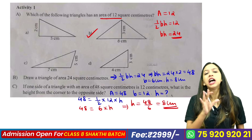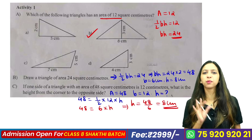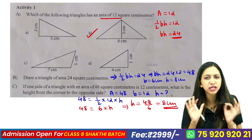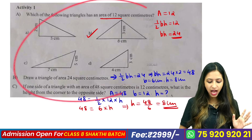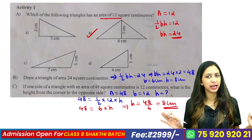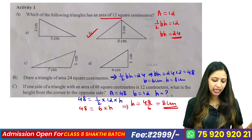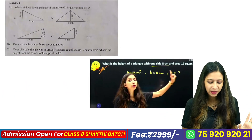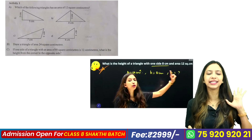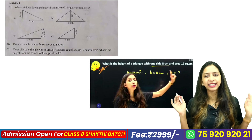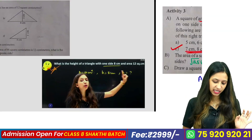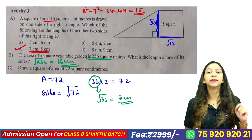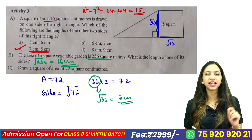If you have a problem, we will have a problem with the same questions. Activity 3 is the question of squares and right triangles.